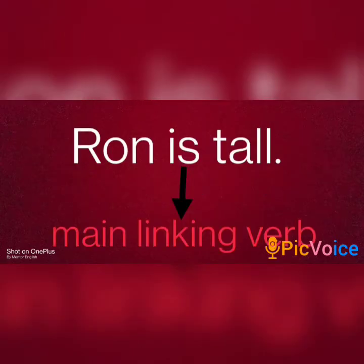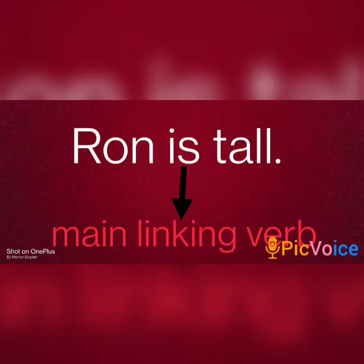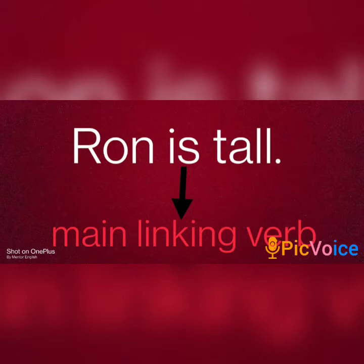For example: 'Ron is tall.' Ron is your noun — a proper noun, name of a boy. Tall is the adjective given to Ron. The word 'is' is in between and it is connecting both words — pulling the adjective from the right side and the noun from the left side. So 'is' has linked Ron and tall together, which is why 'is' is your linking verb. Without it, our sentence 'Ron tall' would be very incomplete.